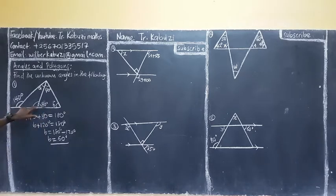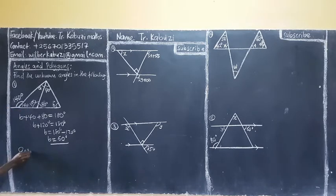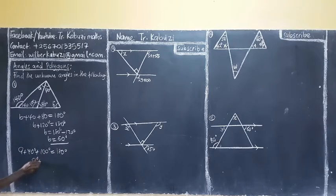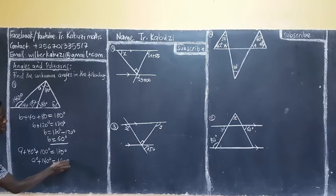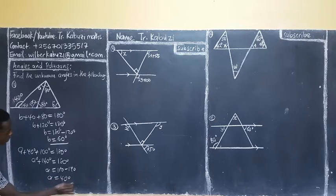Now, if this is 80, it means that this one is going to be 100. And if this is 40, this one is going to be 140 — this one is going to be 40, because the arm is also going to be a straight line. So now, A plus 40 degrees plus 100 — they add up to 180 degrees. So, A plus 140 equals 180 degrees. Take this aside: A will be 180 minus 140, and A becomes 40 degrees.